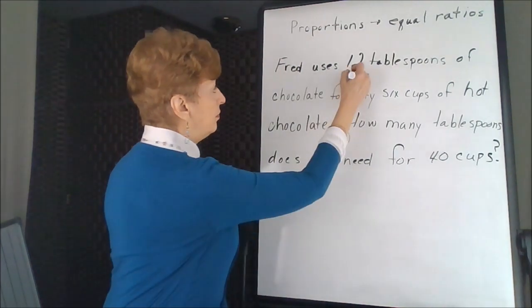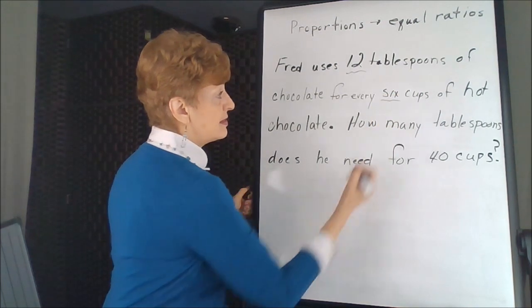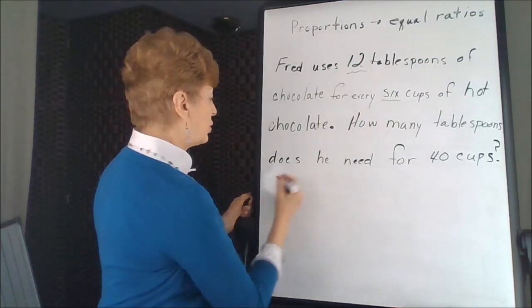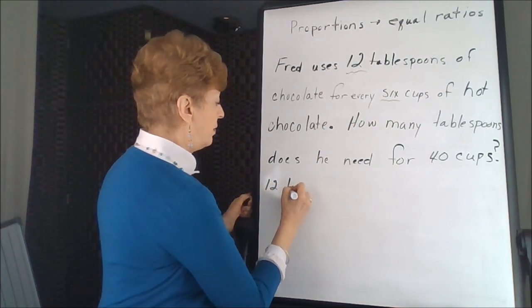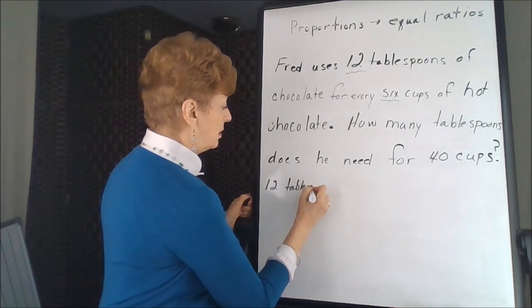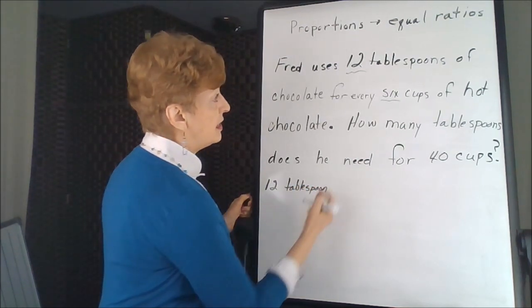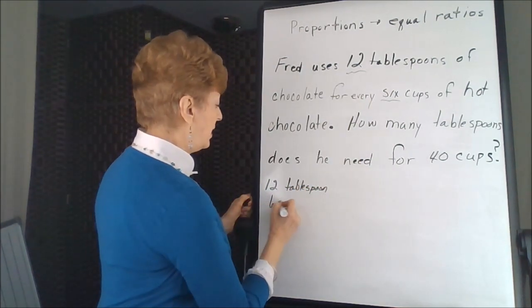Okay, so we have a 12, and here's a 6, but it's written out. So our 12 is tablespoons. That's what the 12 means, and the 6 means cups.